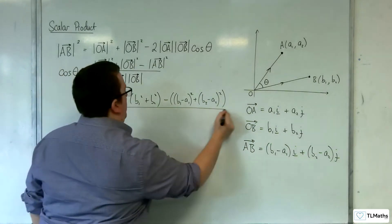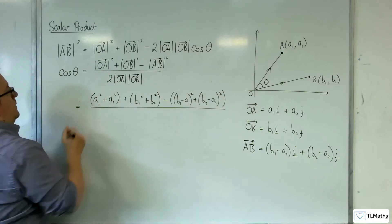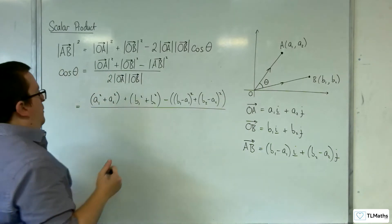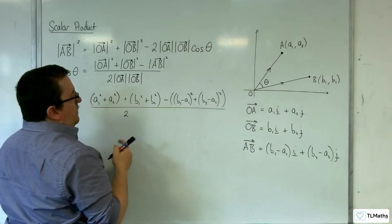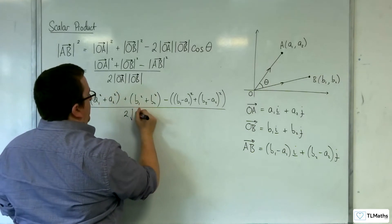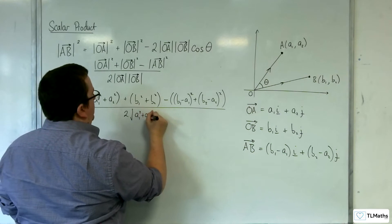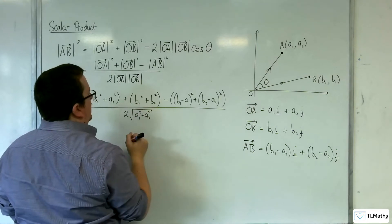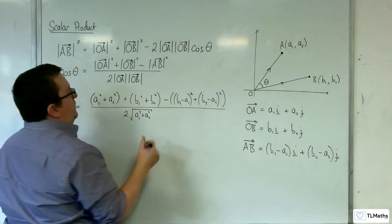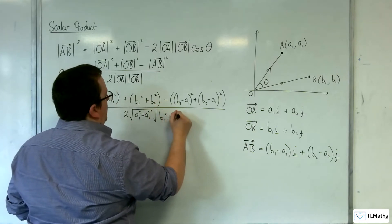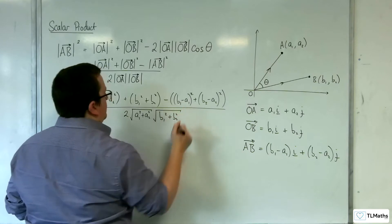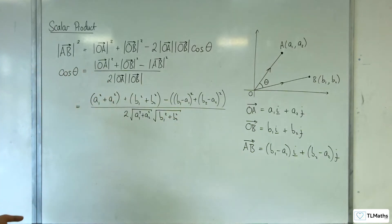All over 2 lots of OA, so that would be the square root of A1 squared plus A2 squared, times the square root of B1 squared plus B2 squared.